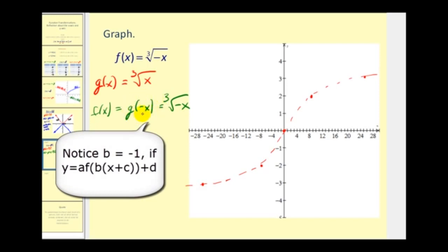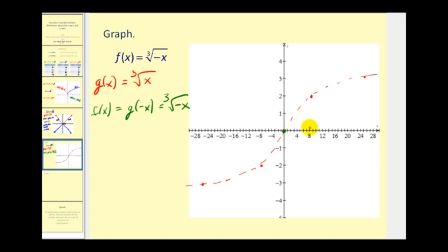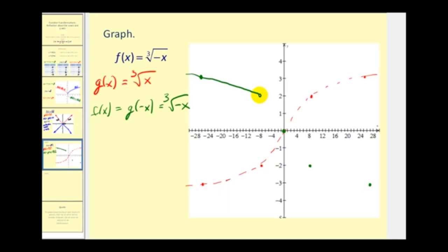Notice we're changing the sign of the input, or every x-coordinate. So let's replot these points by changing the x-coordinates. We still have (0, 0). Then instead of (8, 2), we'll have (-8, 2). Instead of (27, 3), we'll have (-27, 3). Instead of (-8, -2), we'll have (8, -2). And lastly, instead of (-27, -3), we'll have (27, -3). Our transformed graph is green, and now we can see it's a reflection about the y-axis.